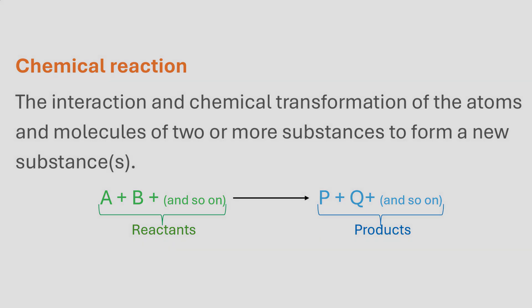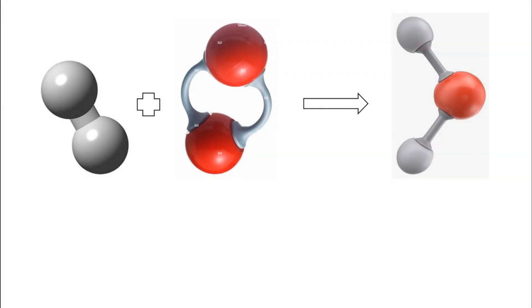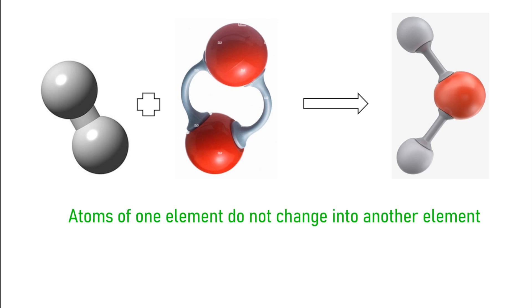A chemical reaction results in the rearrangement of the atoms and molecules of the reactants to form products with new atomic and molecular orientations. This is achieved through the making or breaking of bonds between the constituting atoms. It is worth noting that in a chemical reaction, atoms of one element do not change into those of another element.